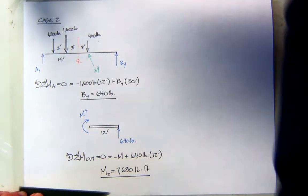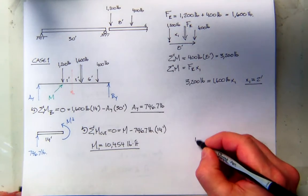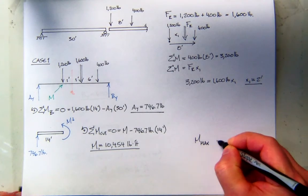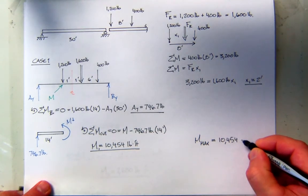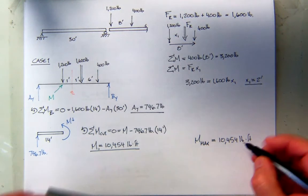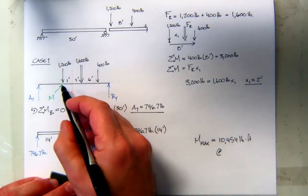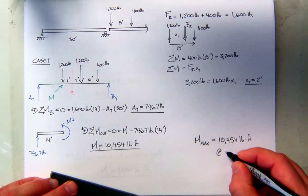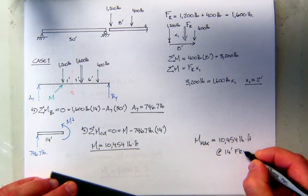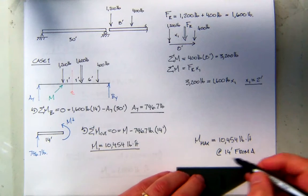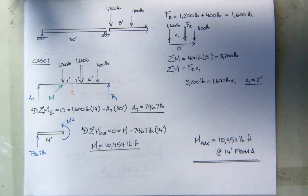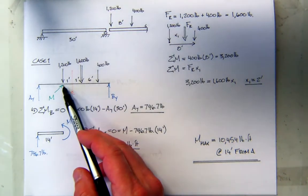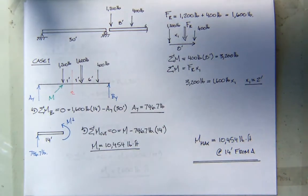So the previous one, we got that. So it looks like the maximum moment will now be 10,454 pound feet at this position, which is 14 feet from A. So not only do we get a value that we know is the maximum value, we know exactly where it occurred. It occurred at this point right here, 14 feet from A.